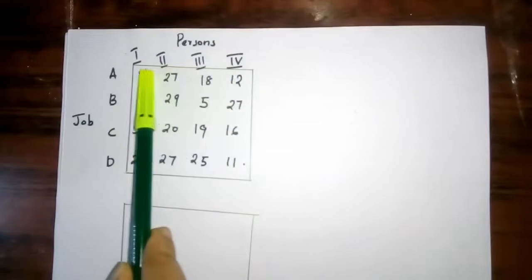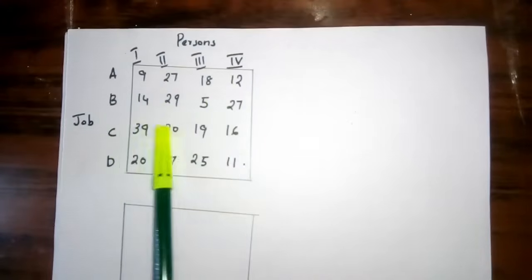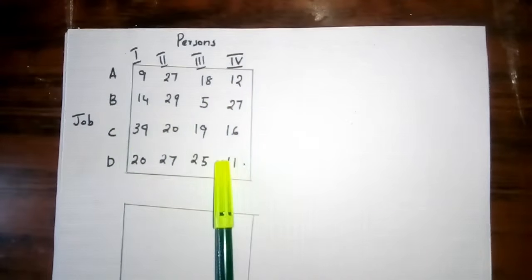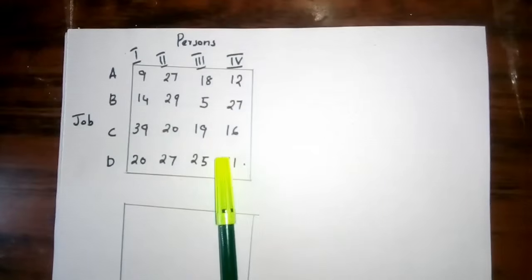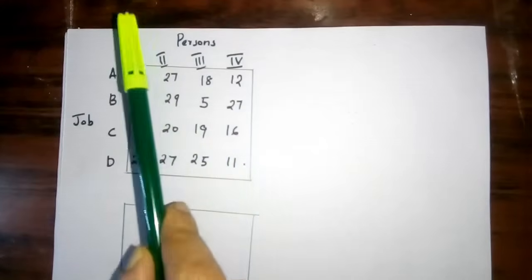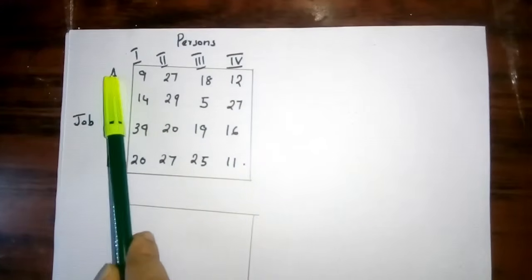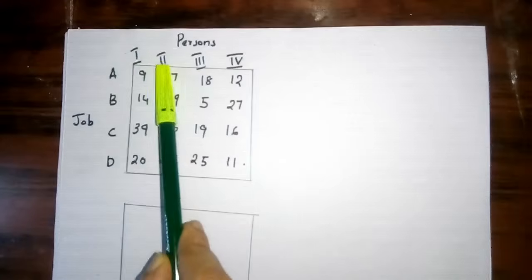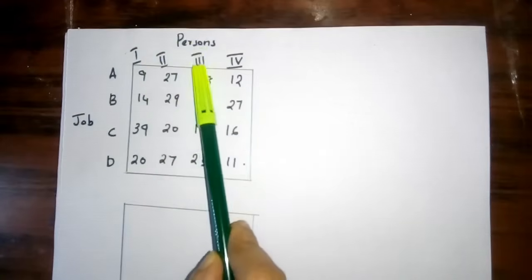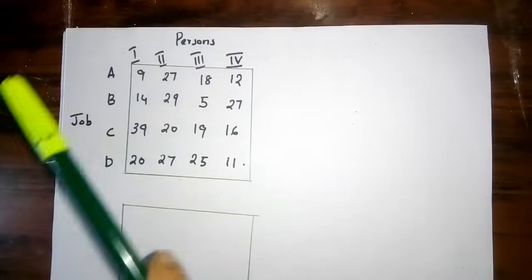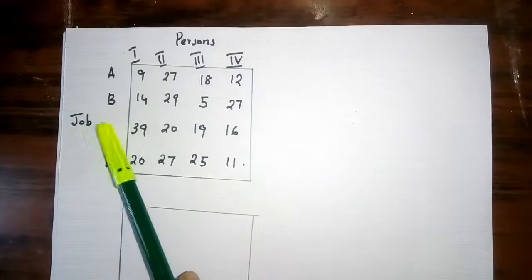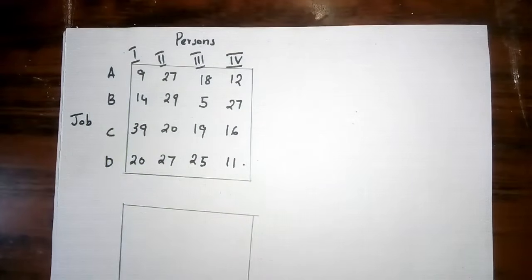This is the cost for doing a job. For this job, the first person is assigned, second person is assigned, third person is assigned, fourth person is assigned. Similarly for jobs B, C, and D.